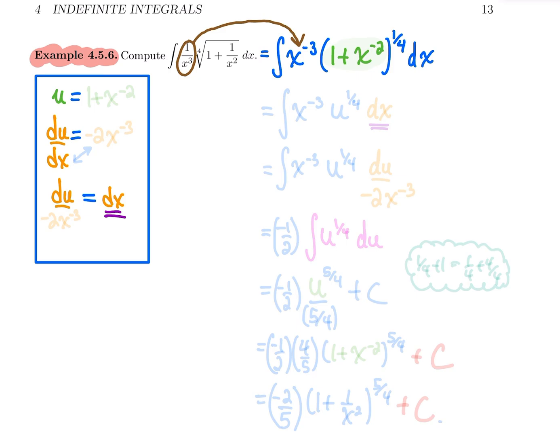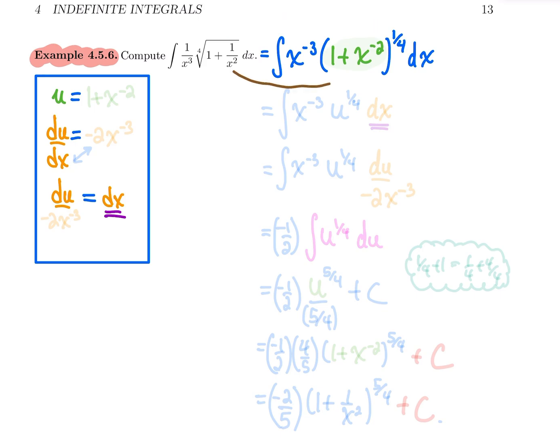So here, one over x cubed is the same as x to the power minus three. The fourth root is the same as powering by one fourth, and one plus one over x squared is the same as one plus x to the power minus two. Then we have dx afterwards.